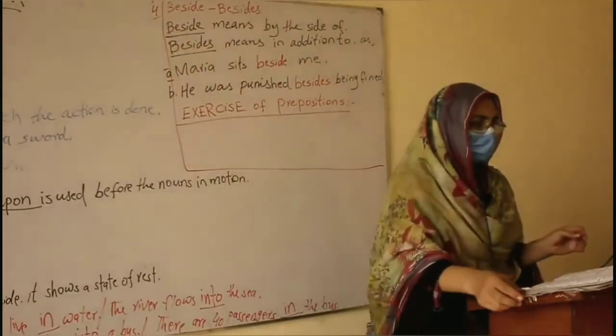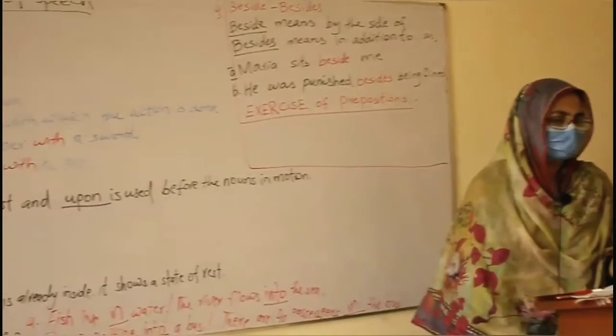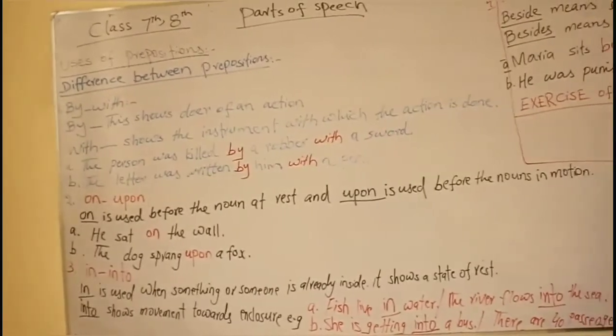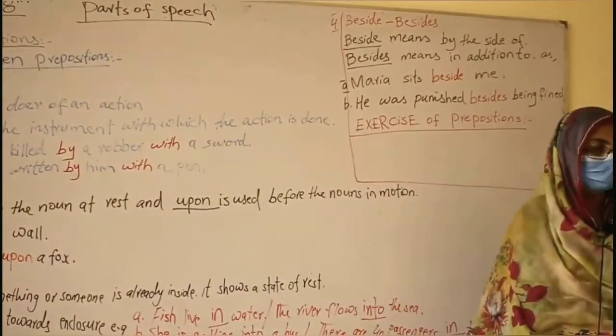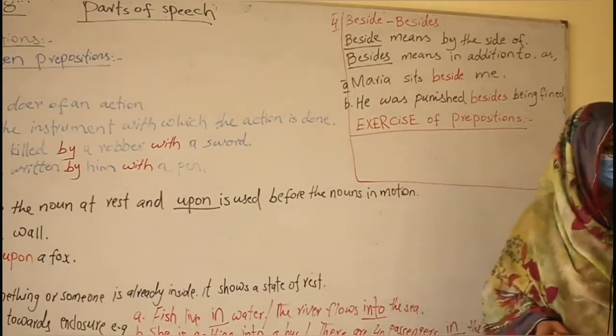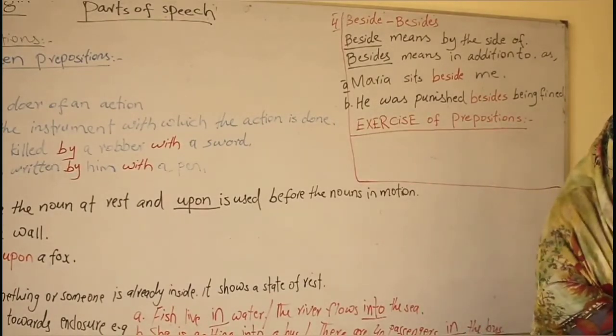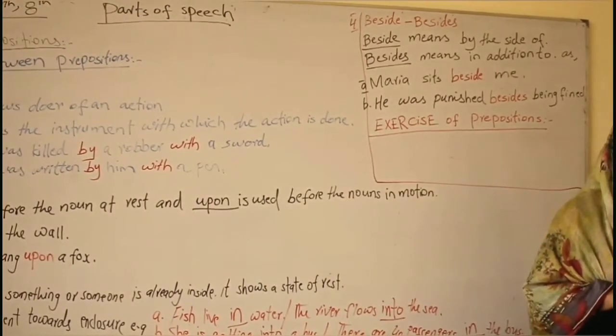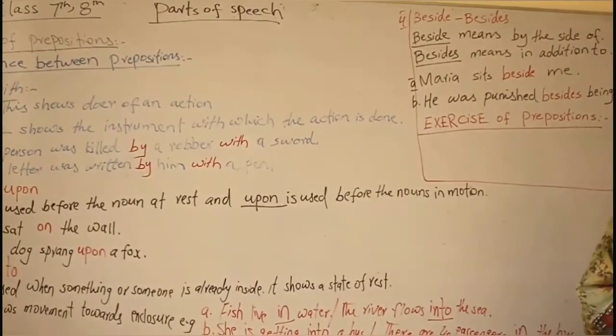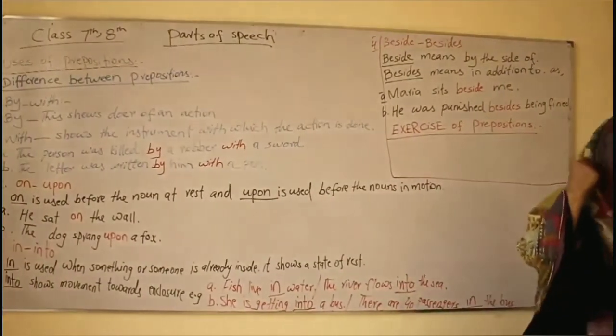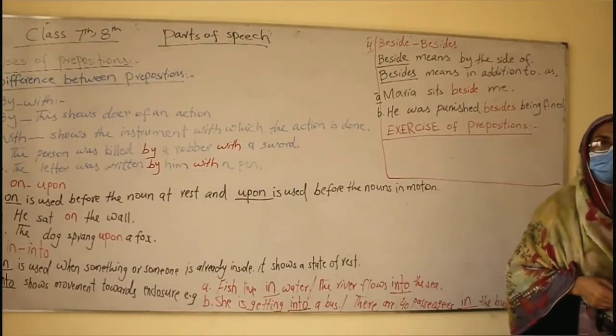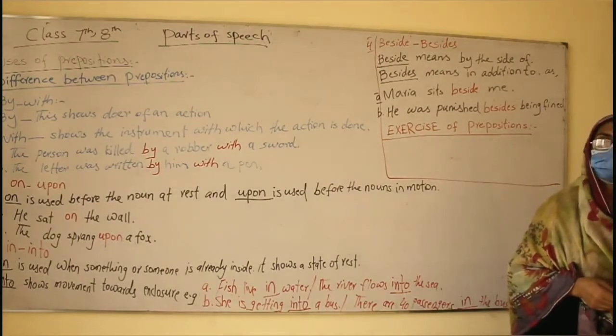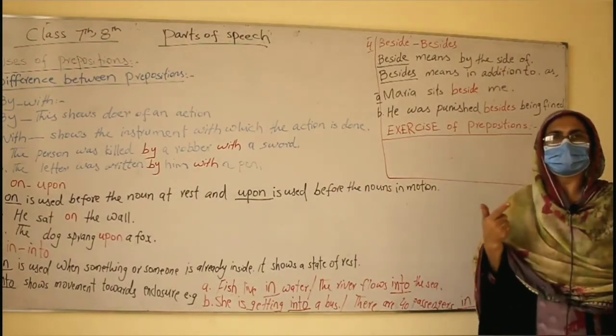Like here point one is he is angry with. Angry always take with. Allah is kind to us not on us. So you have to keep them in mind when once you memorize them it will be forever in your use. He is fond of games, fond always take of. He is lame of one leg. He is blind of one eye not with one eye, blind of. What's the time by your watch not on your watch.